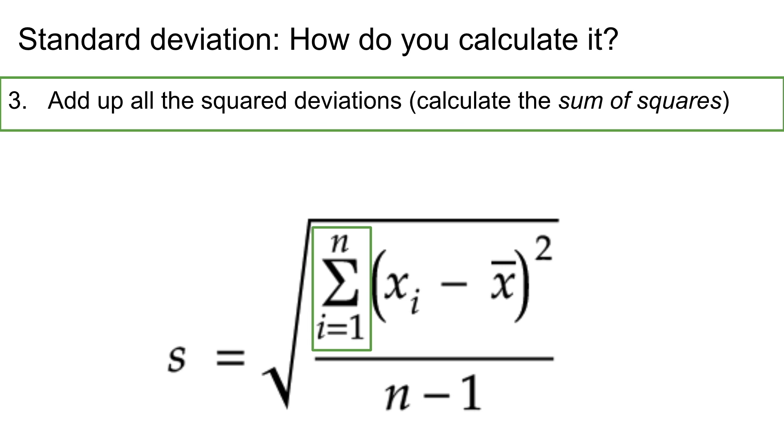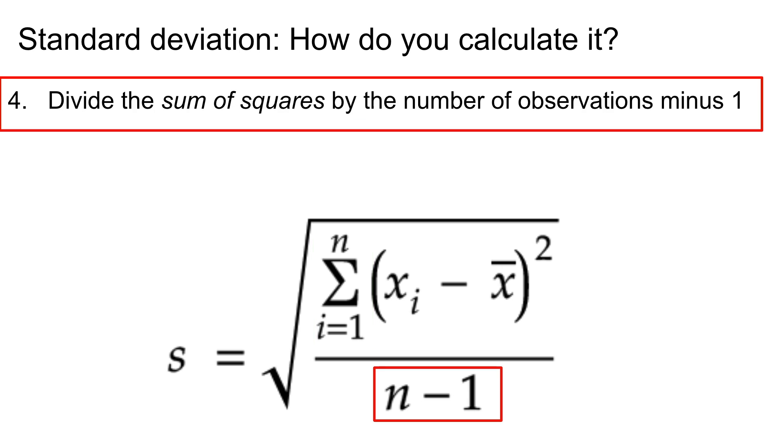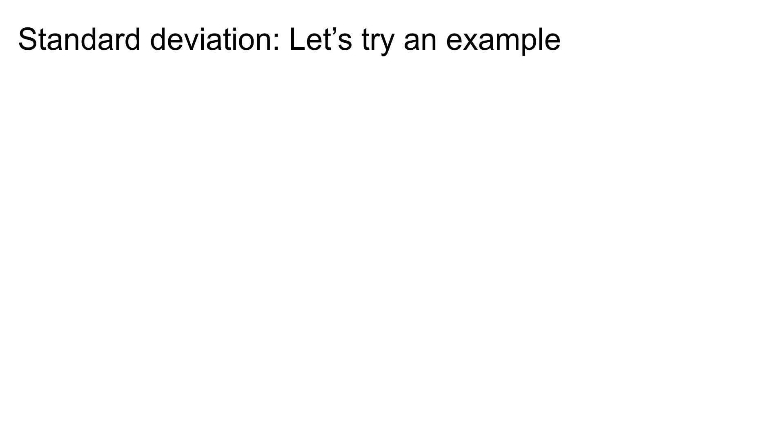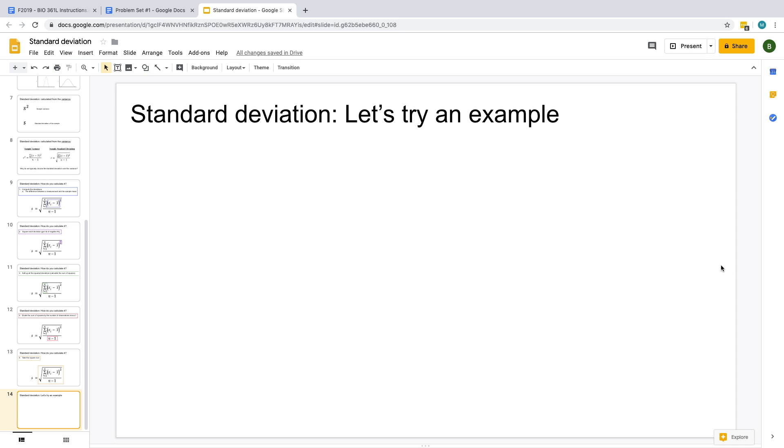Then we need to add up all of these squared deviations which is called a sum of squares. Last but certainly not least we are going to divide our sum of squares by the number of observations minus 1. So our sample size minus 1, this just gives us a more precise measurement of deviation. Last but not least to get rid of that squared, we take the square root of the resultant number. So let's hop over to Excel and give this a try.